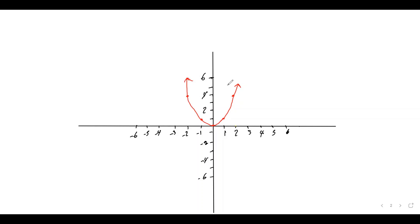As you can see, the graph has a U-shape. All quadratic relations and equations have the same shape, which is a U-shape, and we call this the parabola. The parabola has a vertex, which is the point where the curve changes direction.